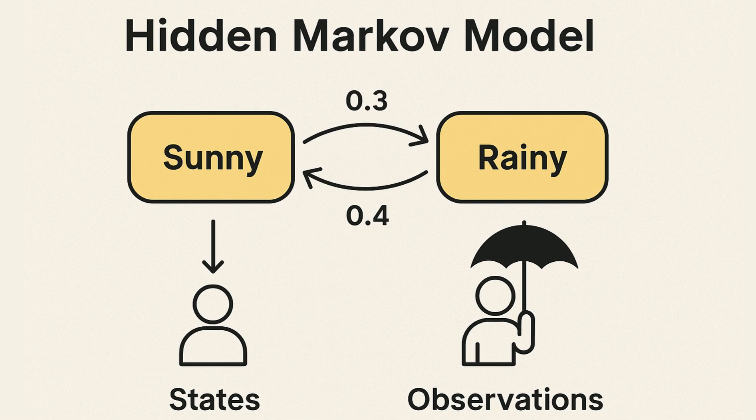In an HMM, there are two layers. The hidden states — in our case, the actual weather: sunny or rainy. And the observations, like seeing someone carry an umbrella. We can't directly see the true state; we only observe the result of that state.